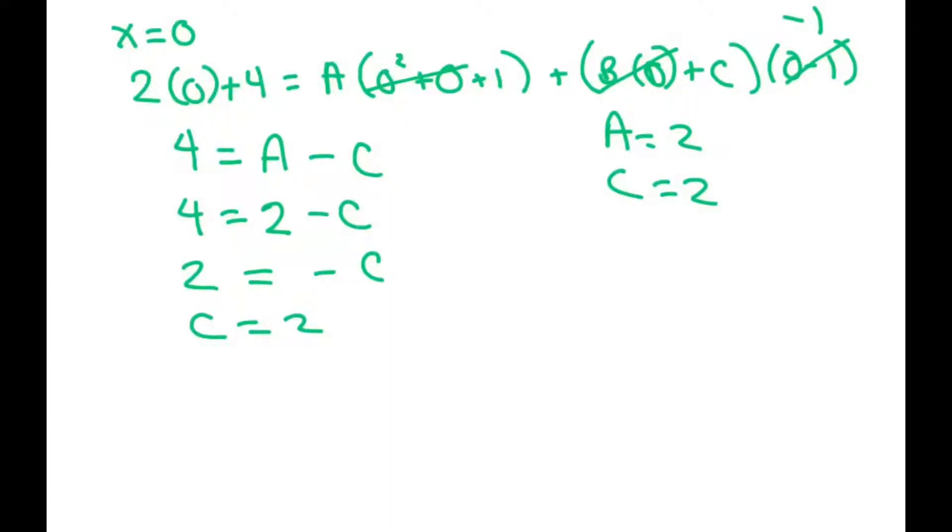The only thing we have to find now is our b. So let's let x equal negative 1. When you do this a lot, it gets easier what to pick. You're trying to eliminate. So we have 2. We're going to plug in negative 1 plus 4. Everywhere there's the x, plug in negative 1. So we get a times negative 1 squared plus negative 1 plus 1. Plus b times negative 1 plus c times negative 1 minus 1.